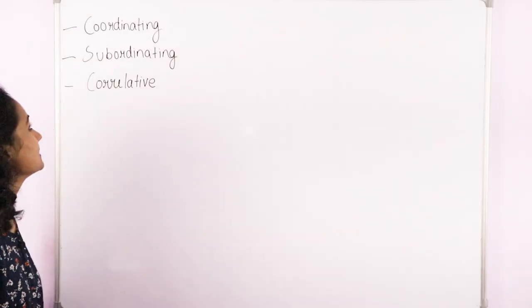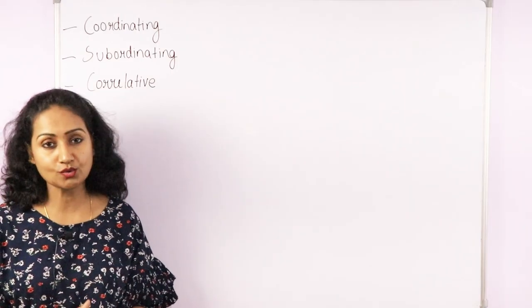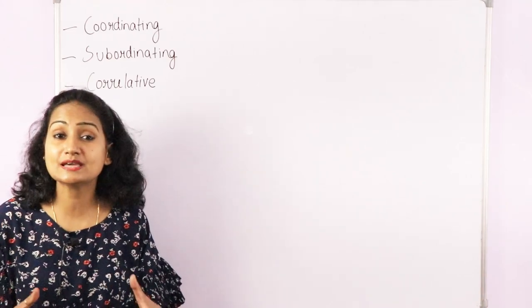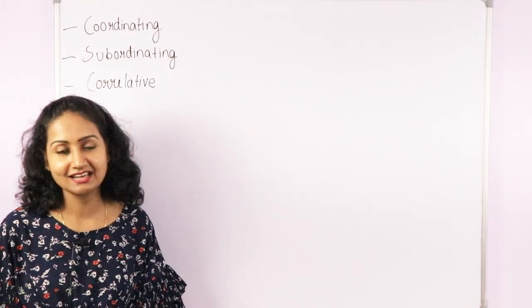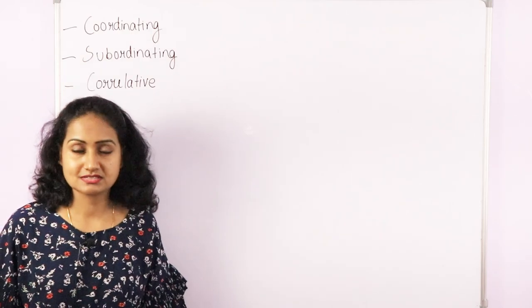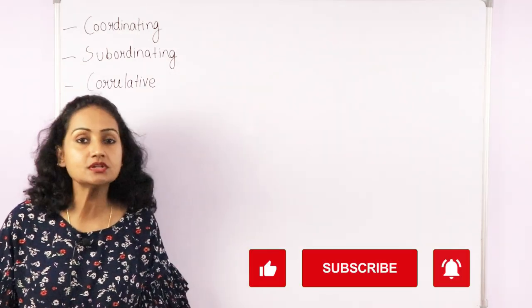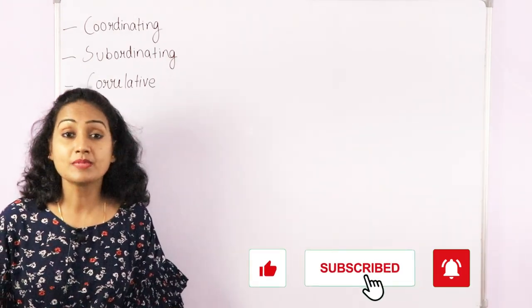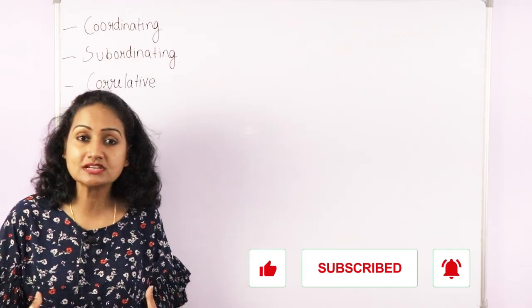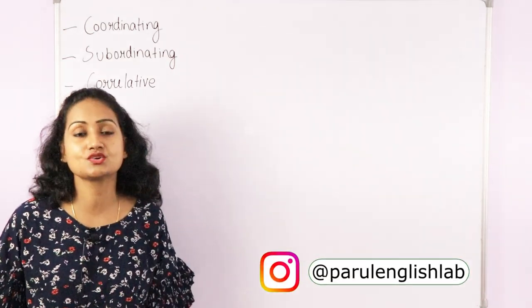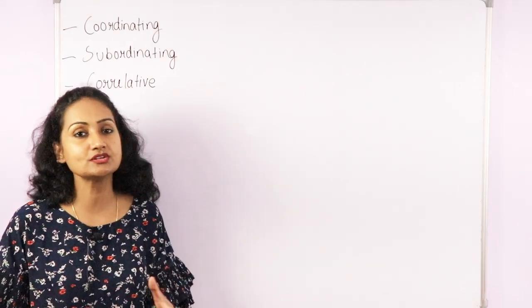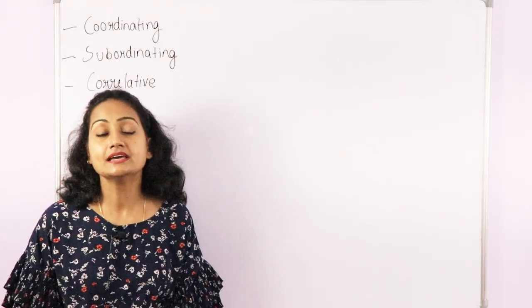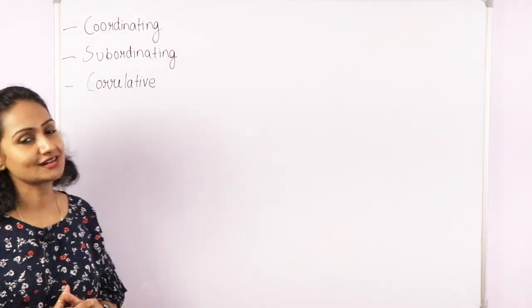Now let's see the three main types of conjunctions: coordinating, subordinating, and correlative. Don't get confused by the names — what's important is knowing where and how to use these conjunctions correctly. Conjunctions are a huge topic and impossible to cover in one video, but they are very important because they take you to an advanced level and enhance your language. Today I'm introducing a conjunction series, and this video will discuss coordinating conjunctions.